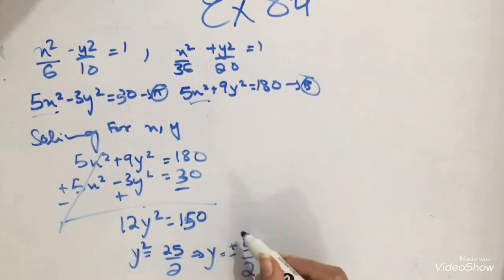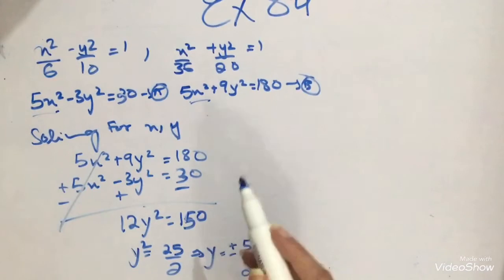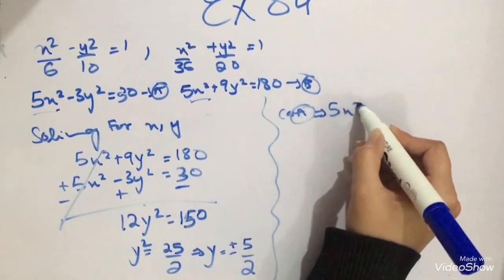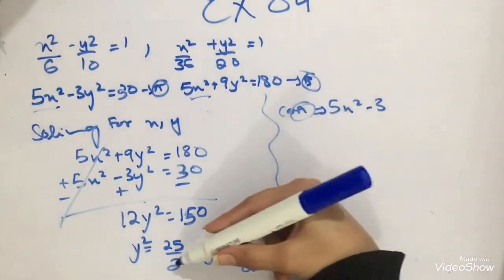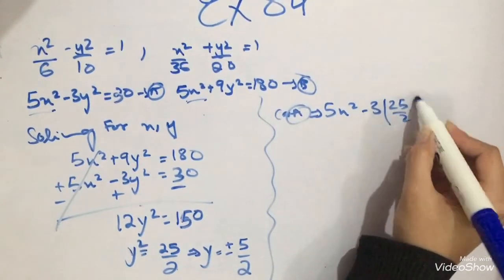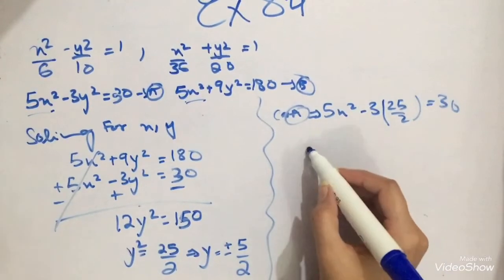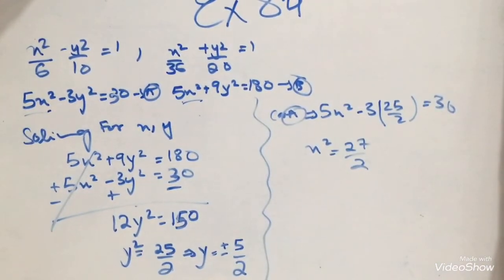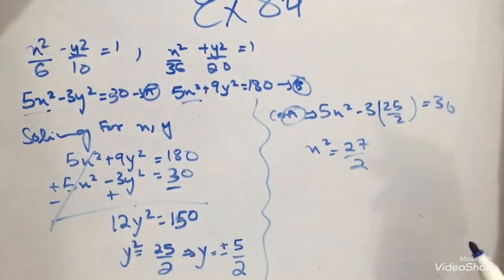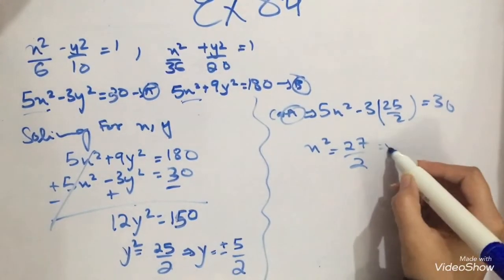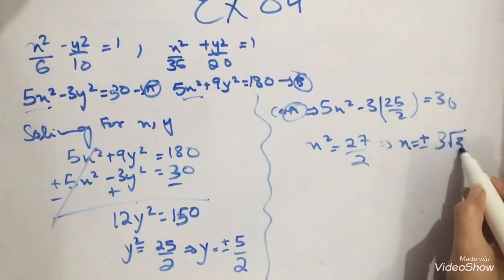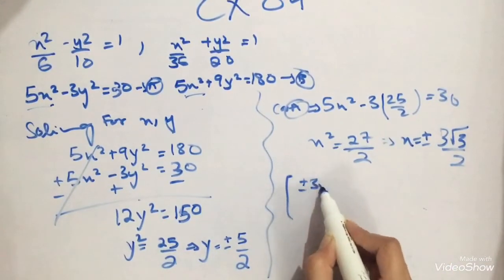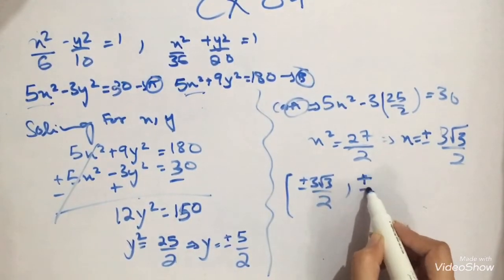Now that I have the value of y, I substitute y squared equals 25 upon 2 back into equation A: 5x squared minus 3 times 25 upon 2 equals 20. Simplifying gives x squared equals 27 upon 2, so x equals plus or minus 3 root 3 upon root 2. So the coordinates are x equals plus or minus 3√3/√2 and y equals plus or minus 5/√2.